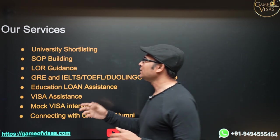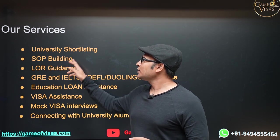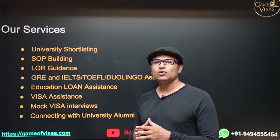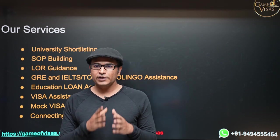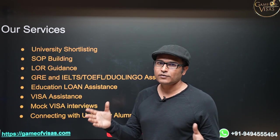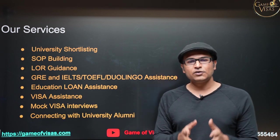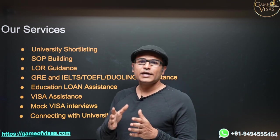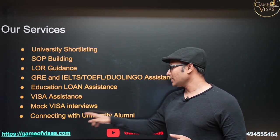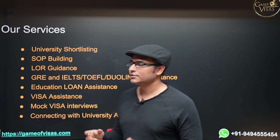The services provided include university shortlisting based on your profile, statement of purpose building, LOR guidance, GRE and English test assistance, and education loan assistance — without any collateral. Getting an education loan is very simple these days. Whether you apply to 10 lakh, 20 lakh, or 50 lakh universities, you can get a complete education loan and pay it off in one year after getting a job. Game of Visas has a 99% success rate.